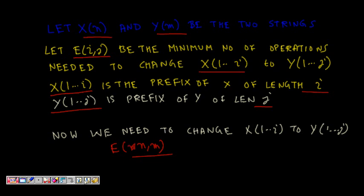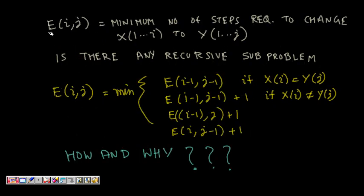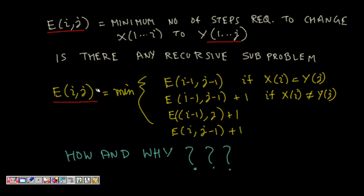E[i,j] is the minimum number of steps required to change X[1..i] to Y[1..j]. The question is: can we identify sub-problems? Can we divide E[i,j] into smaller sub-problems, solve those, and combine them to get the answer for E[i,j]?